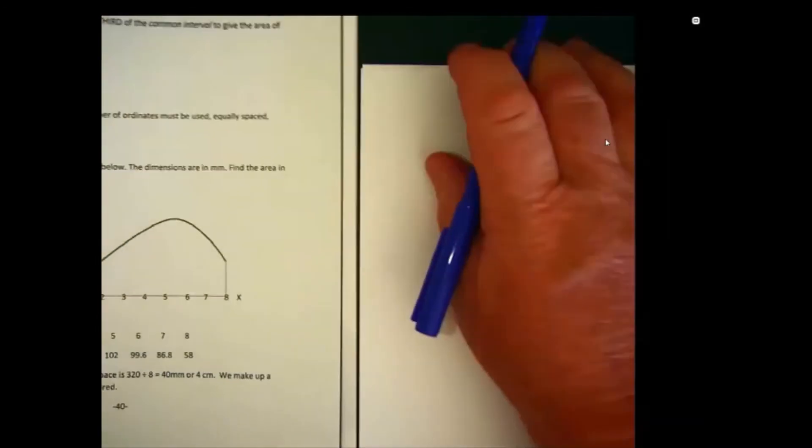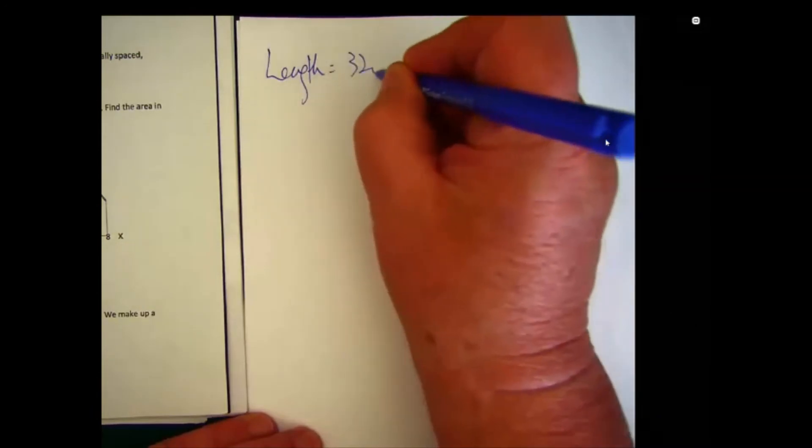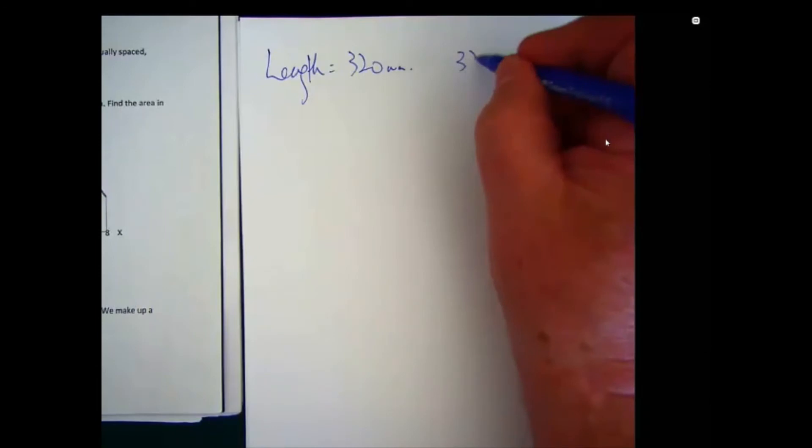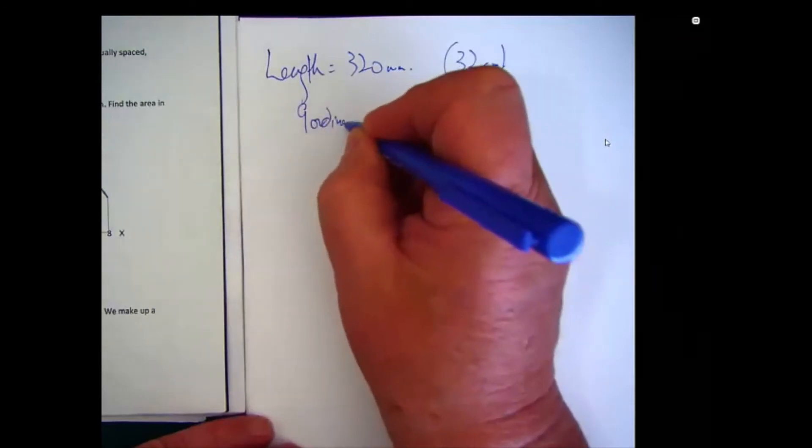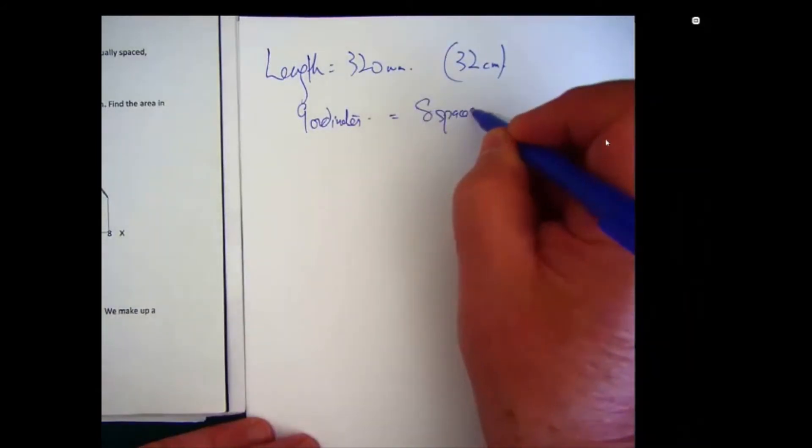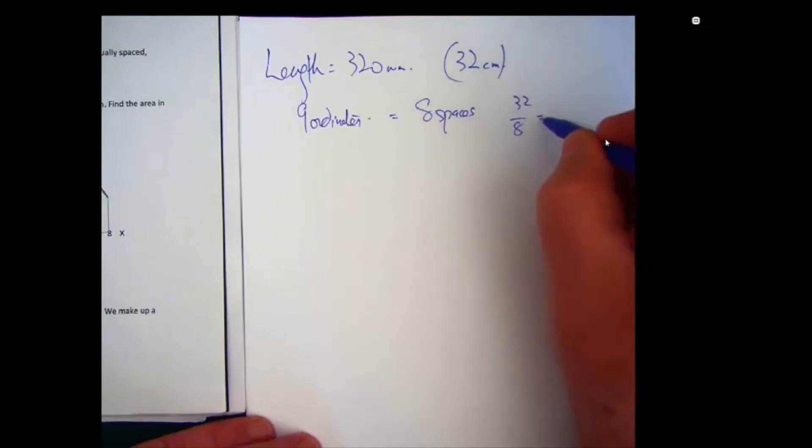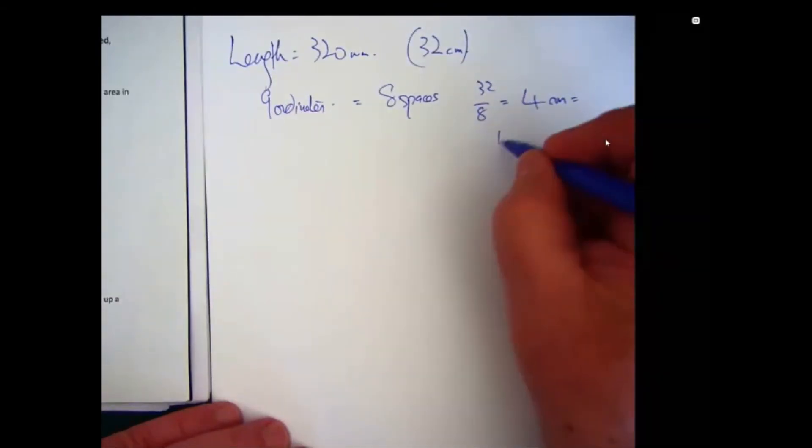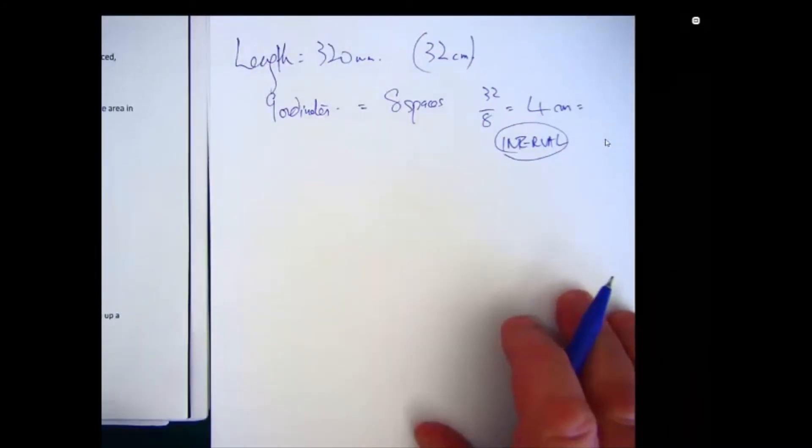So here's a solution. Using that particular diagram, we notice that the total length is 320 millimeters or 32 centimeters. And we've got 9 ordinates. See, 8 including the 0, over 9 ordinates. That gives us 8 spaces. So 32 divided by 8 will give us 4 centimeters. And this will be the interval. So we'll label that as the interval. And that's the same throughout the whole plate.